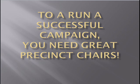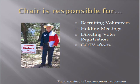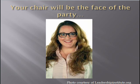In order to run an effective grassroots campaign, each major party either elects or appoints a chairperson for each precinct, which is a geographic region containing no more than 3,000 residents. This chairperson is responsible for recruiting volunteers, holding meetings, and directing voter registration and GOTV efforts.